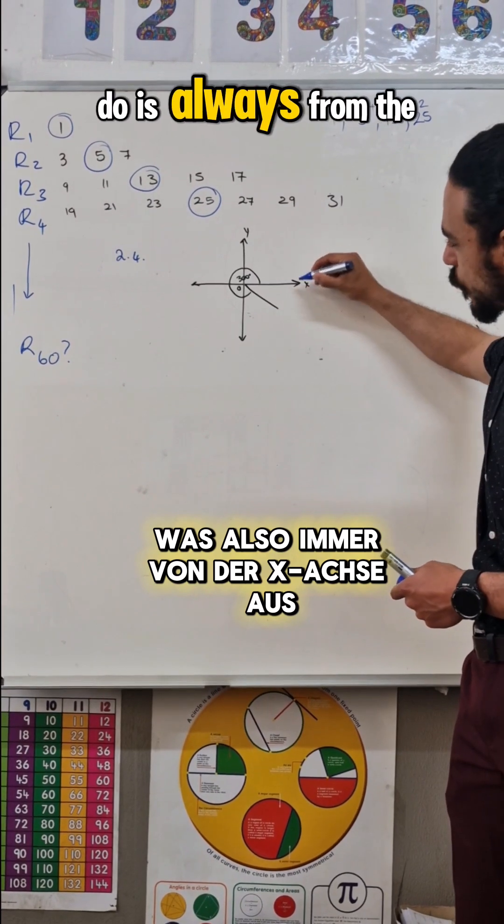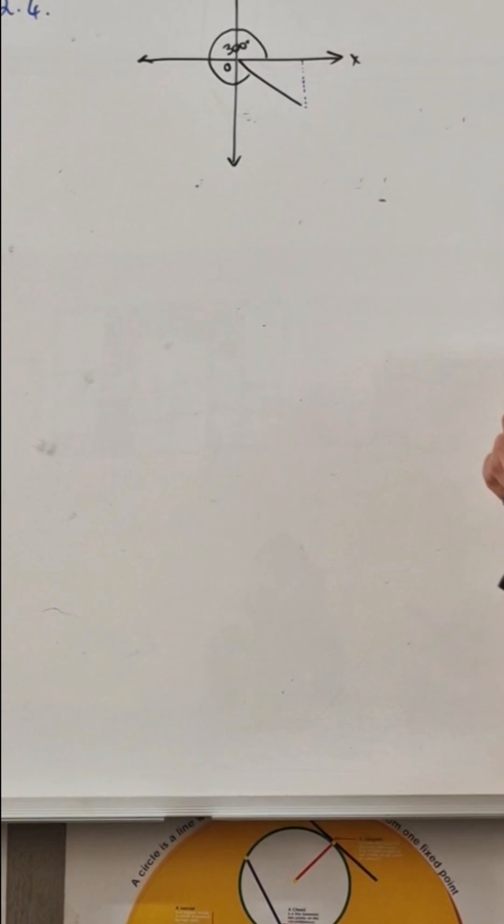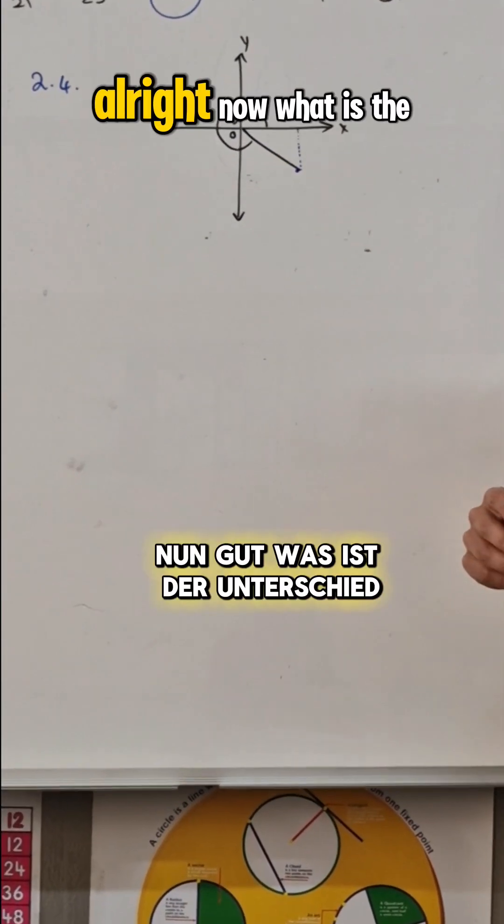What you're going to do is always from that x-axis, no matter in which quadrant you are, you do a dotted line up until that point in the right way.